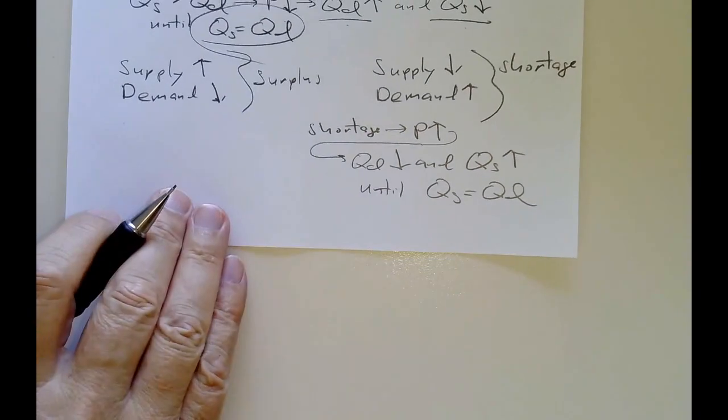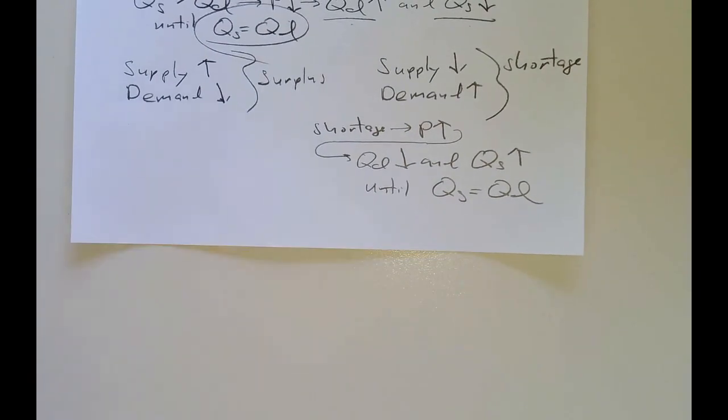So almost done with chapter three. The last thing to do is to show what happens when supply and demand change at the same time. So far, we've shown our four changes separately. Now there's also four possibilities of them changing at the same time. And that will be the last lecture for chapter three.